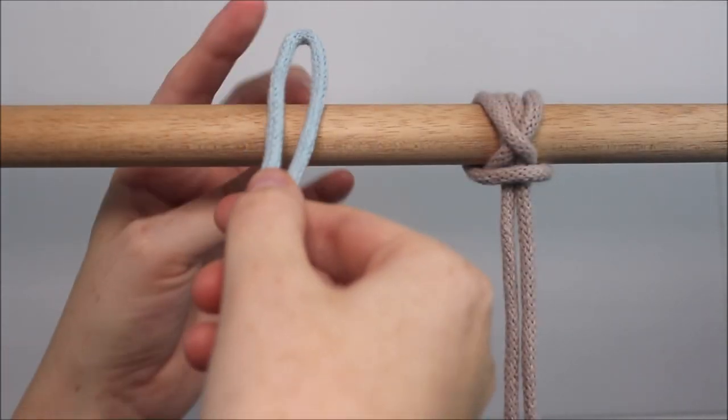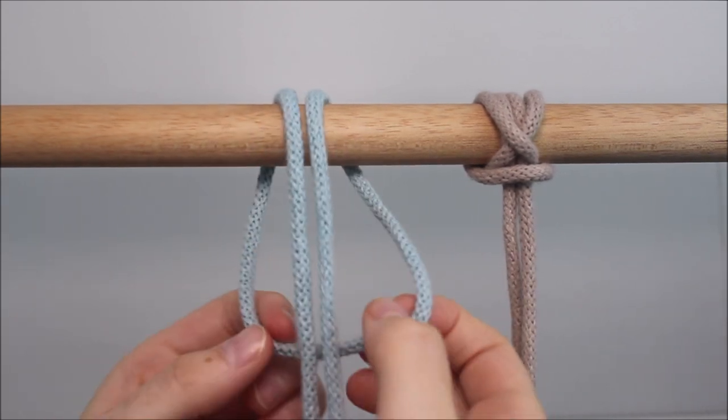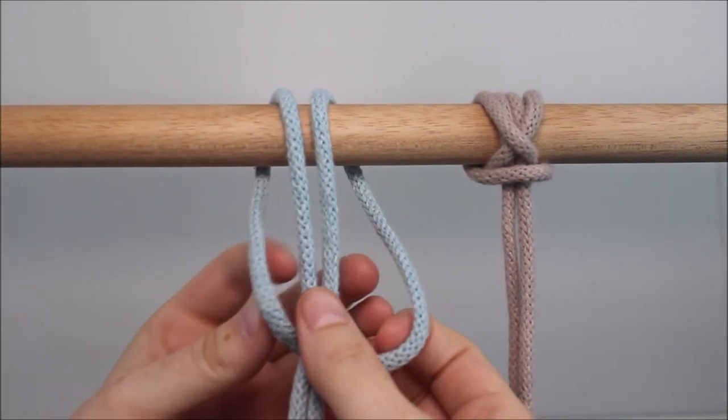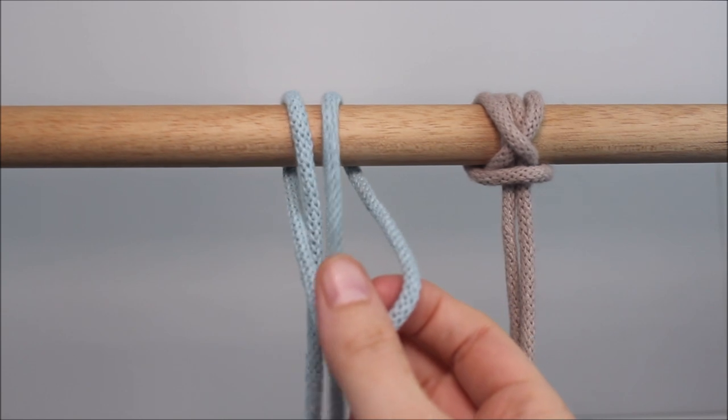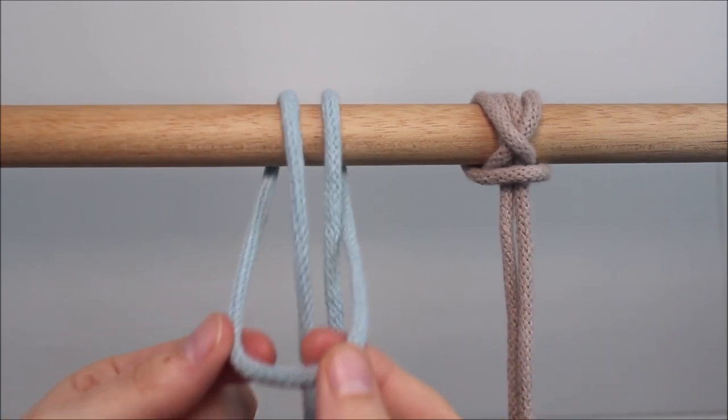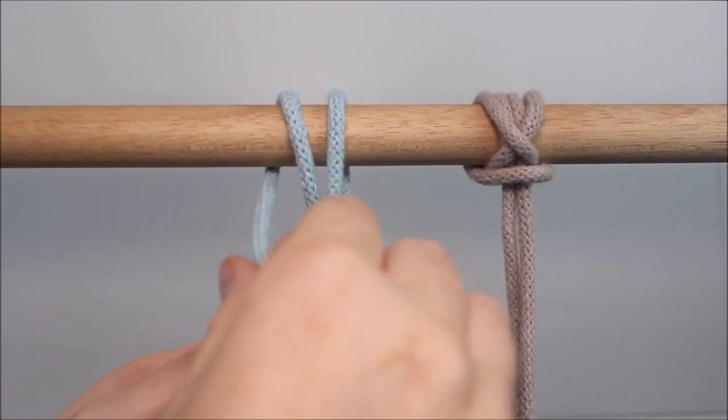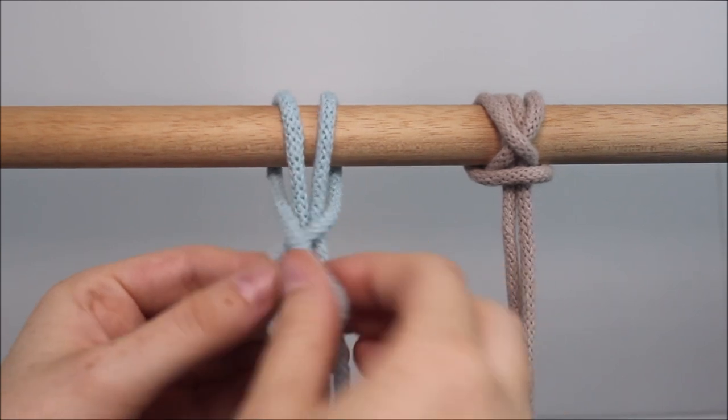Take your folded cord, send it over your dowel rod so there's a loop behind. Take the two ends and pull them through the loop. Then, take that folded end and just twist it to form an X.